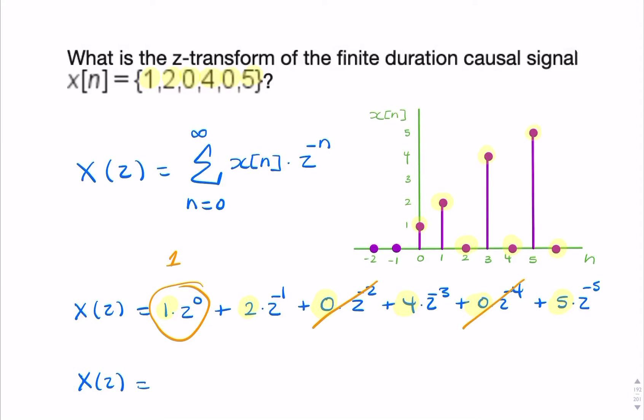X of z equals 1 plus 2z to the minus 1 plus 4z to the minus 3 plus 5z to the minus 5. So that, there is our final answer. That's the z-transform of the sequence given.